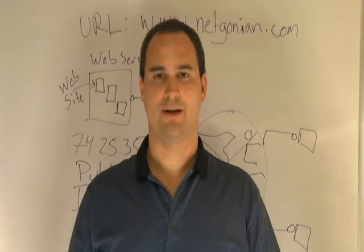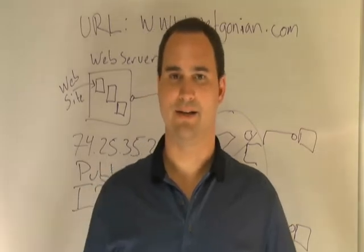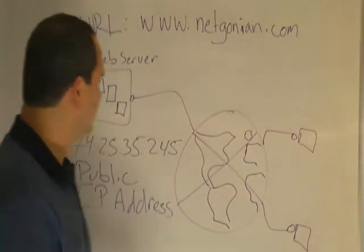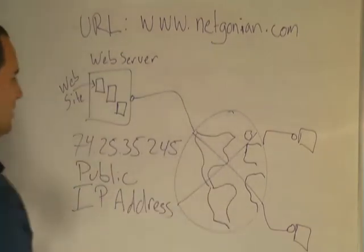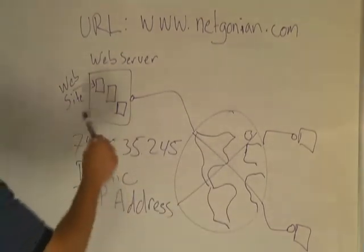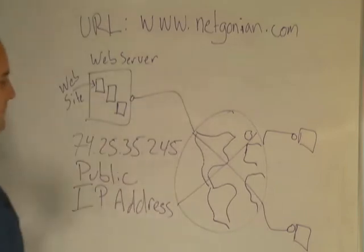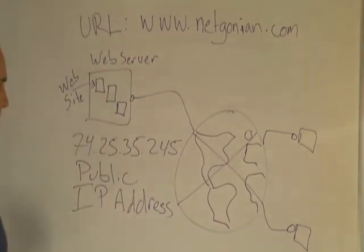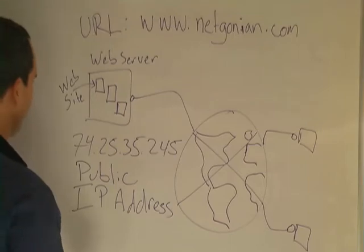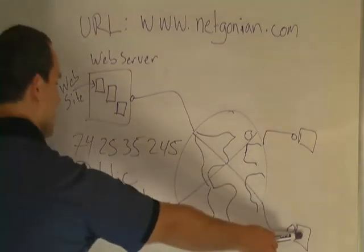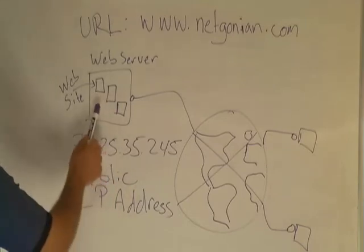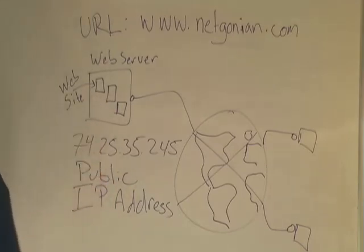The first thing we're going to take a look at is basically how the Internet is set up. The Internet consists of a lot of wiring that criss-crosses the entire Earth and connects up computers — actually hundreds of millions of computers. One of the primary uses of the Internet is for one computer to get something from another computer, usually a website.